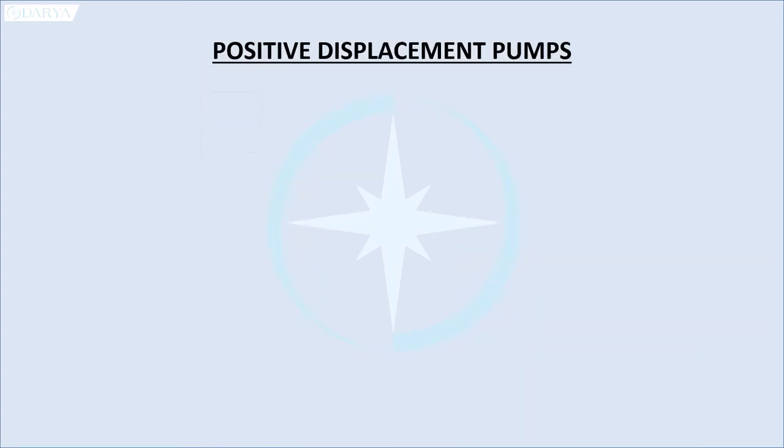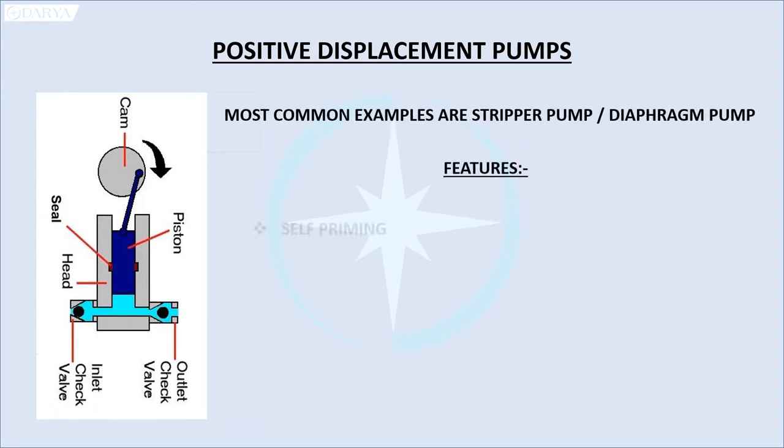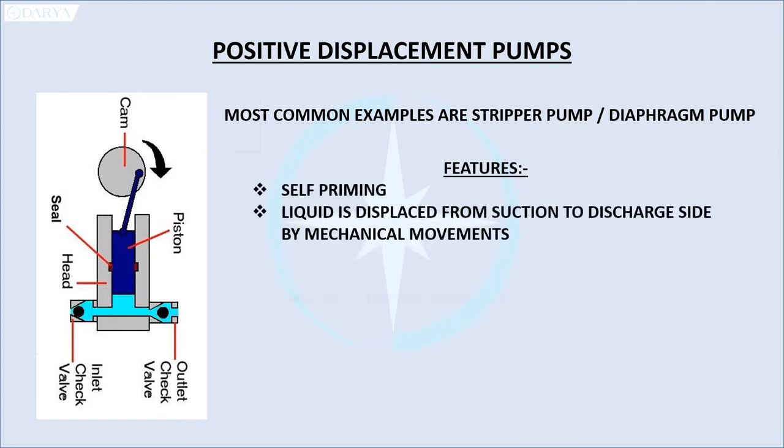Positive Displacement Pumps displace liquid from inlet and move it to an outlet for discharge. The common features are they are self-priming, and the liquid is displaced from suction to discharge site by mechanical movements.